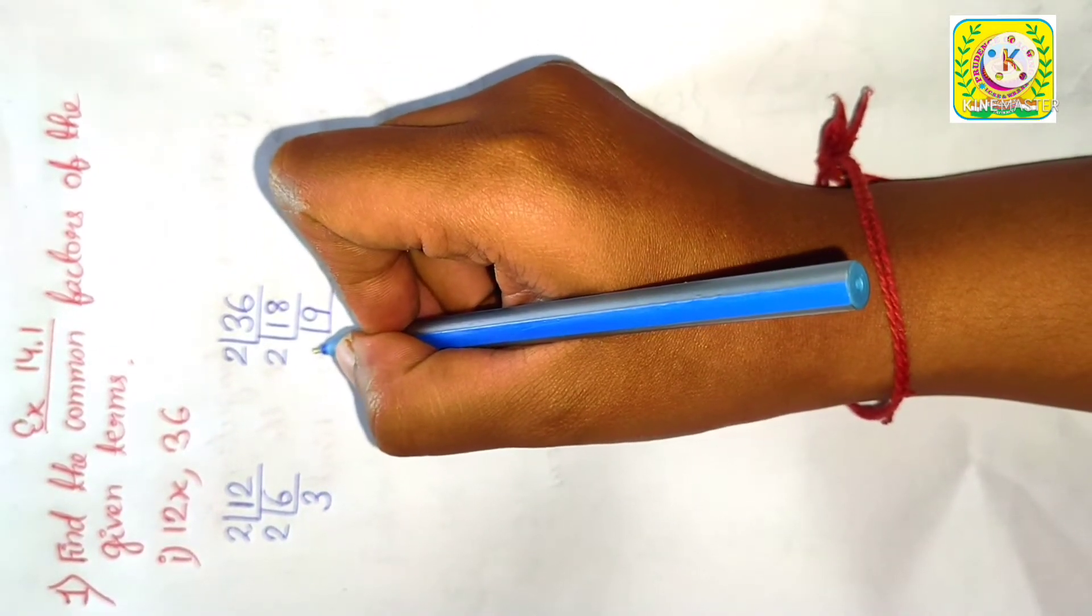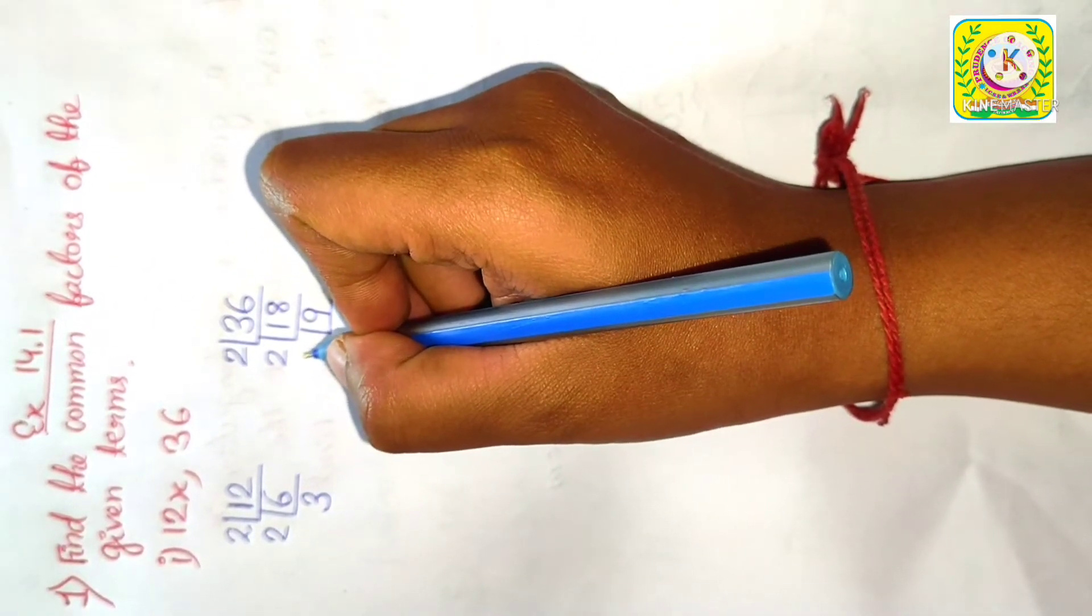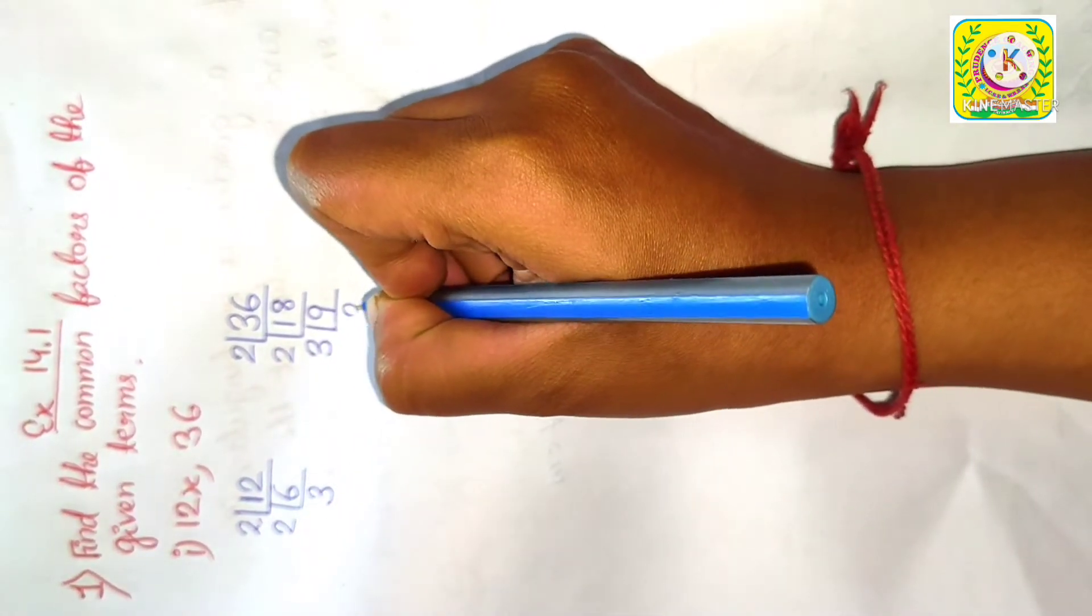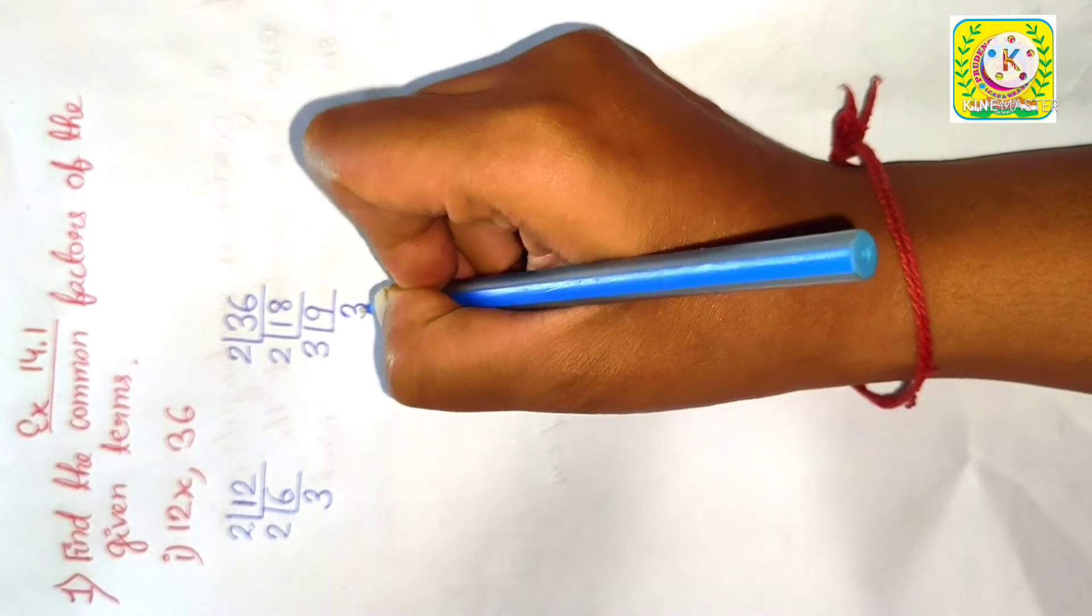Now, 9 is not at all divisible by 2. So, we will find out whether it is divisible by the next prime number, that is 3 or not. We know 3 into 3 is 9. Here we have got 3 which is a prime number, so we will stop here.